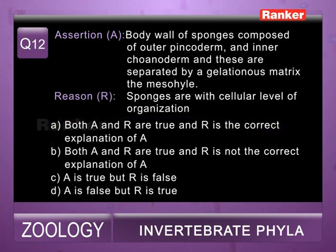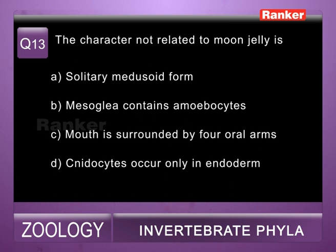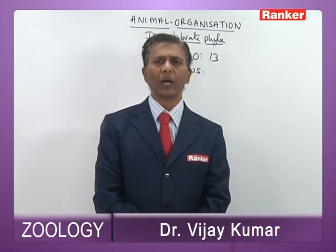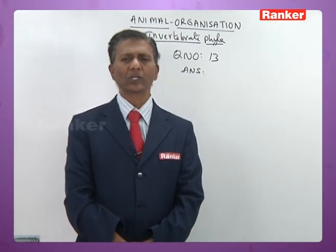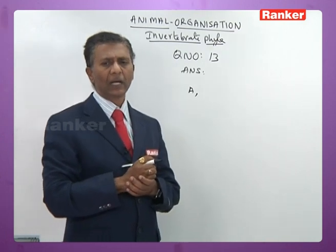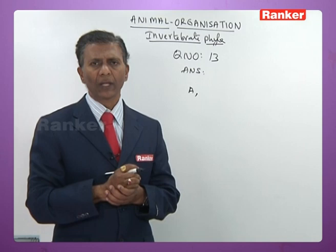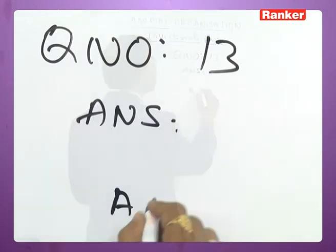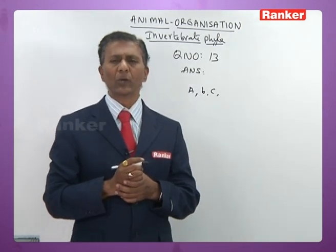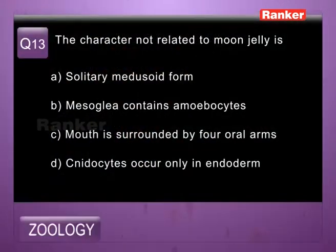Thirteenth question: the character not related to moon jelly — a) solitary medusoid form, b) mesoglea contains amoebocytes, c) mouth surrounded by four oral arms, d) nematocytes occur only in endoderm. Moon jelly is Aurelia, which belongs to Scyphozoa. Options a, b, and c are correct for moon jelly. In Scyphozoa and Anthozoa, nematocytes are present in both ectoderm and endoderm, so option d is wrong. Thirteenth question correct answer is d.